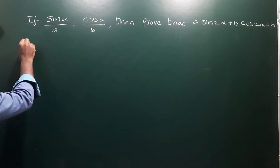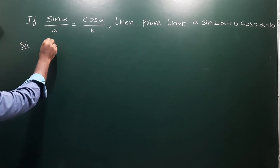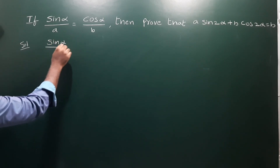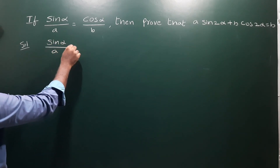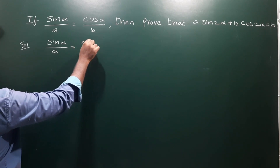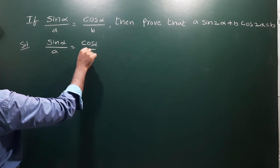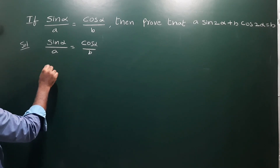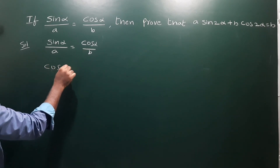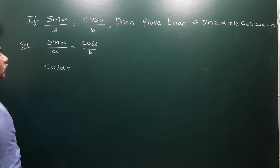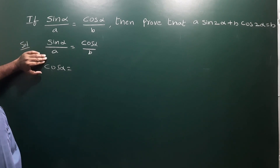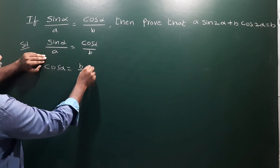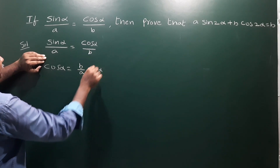First, write the given information: sinα/a is equal to cosα/b. From this, we can find the value of cosα. So cosα is equal to (b/a)·sinα.